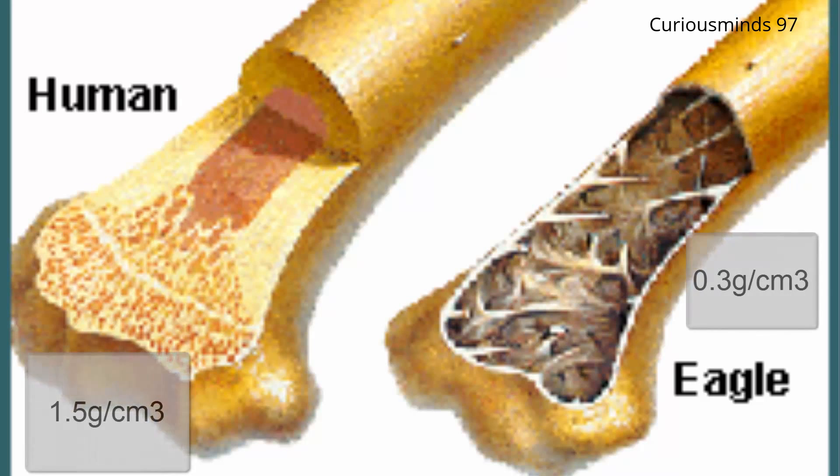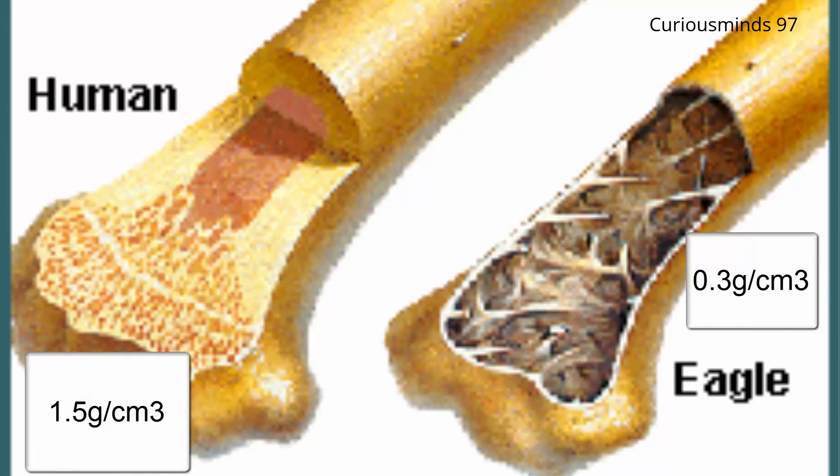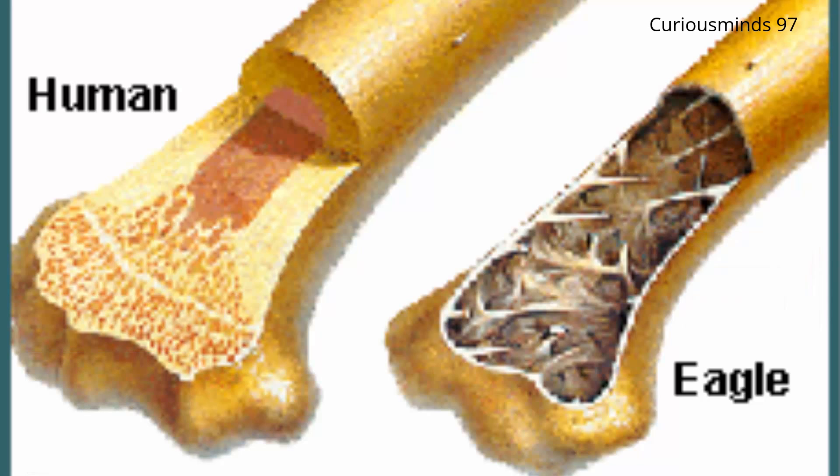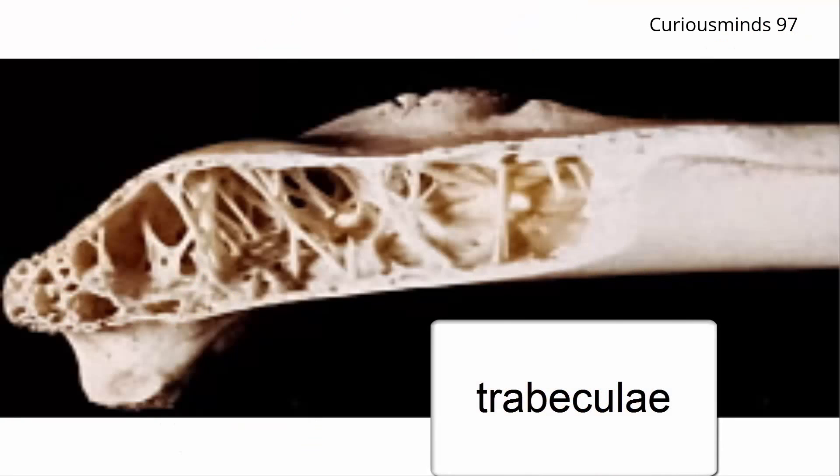A bird's bone has a density of about 0.3 gram per centimeter cube, whereas a human would average 1.5 gram per centimeter cube. Bones are mostly air-filled but reinforced by cross beams known as trabeculae, which is a Latin name for small beams.